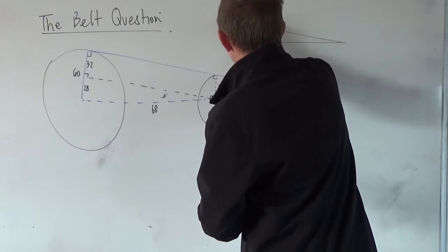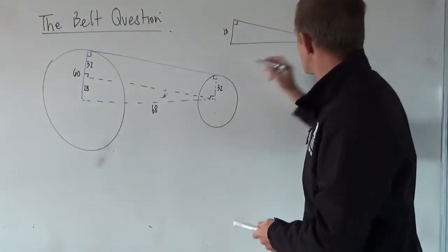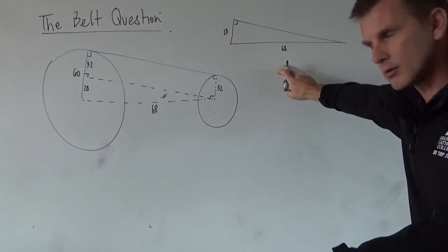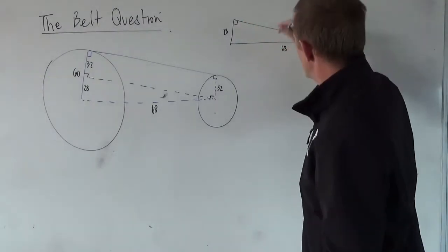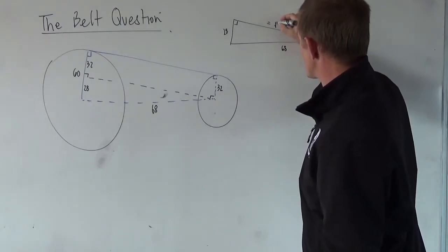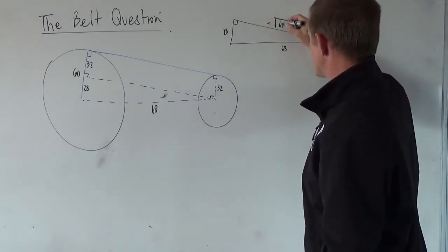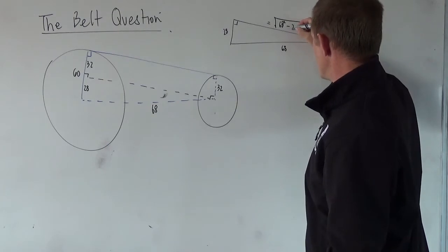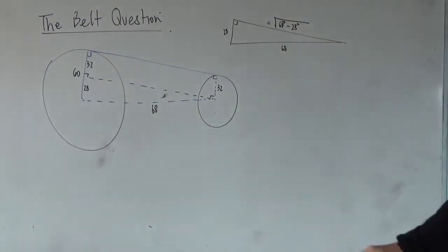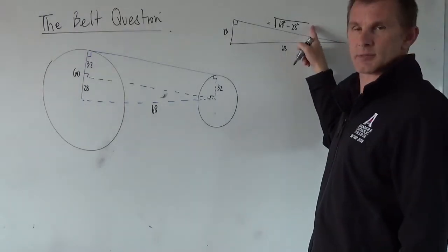This distance here is 28 and this distance here is 68. 68 is the hypotenuse, because it's opposite the right angle. So this distance here is actually going to be equal to the square root of 68 squared minus 28 squared. Whatever that is, I don't care about what that is but it's going to be a little bit smaller.